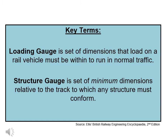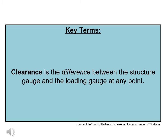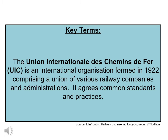Two key terms: loading gauge is a set of dimensions that a load on a rail vehicle must be within to run in normal traffic. Structure gauge is a set of minimum dimensions relative to the track to which any structure must conform. The term clearance is the difference between the structure gauge and the loading gauge at any point. The Union Internationale de Chemin de Fer, the UIC, is an international organisation formed in 1922 comprising a union of various railway companies and administrations that agrees common standards and practices.